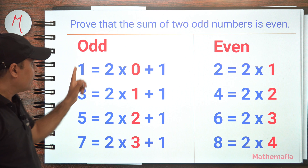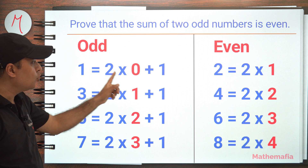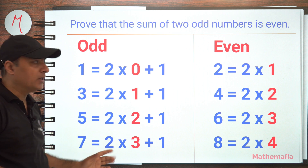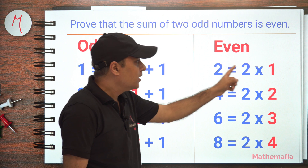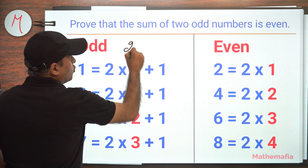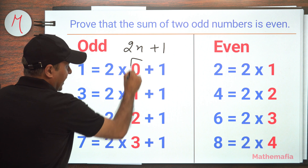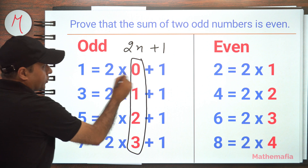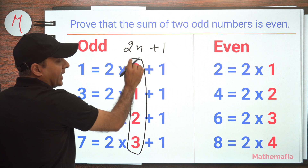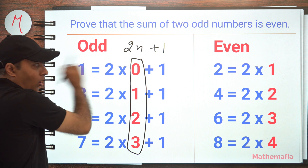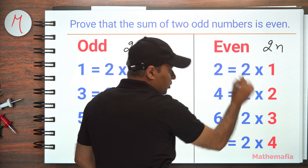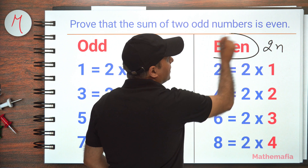For example, if I have an odd number one, it can be written as two into zero plus one. Three can be written as two into one plus one. This is very trivial. Similarly, an even number can be written as two into one, two into two, two into three, two into four. So here we have 2n plus one where n is an integer. Any number of this form, where n is an integer, is always an odd number. And if we have a number of the form 2n where n is an integer, that number is always an even number.